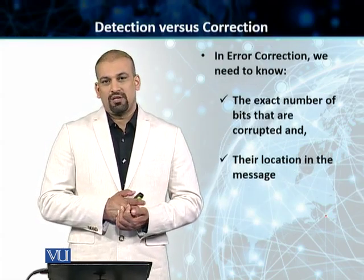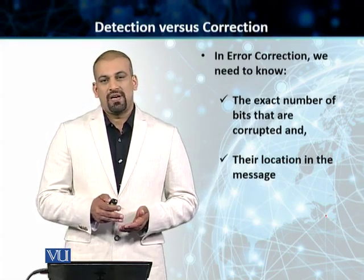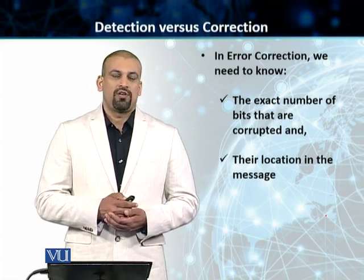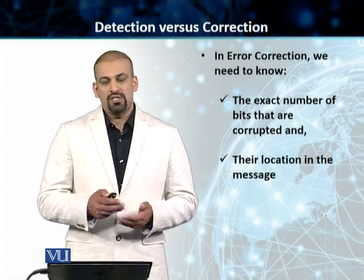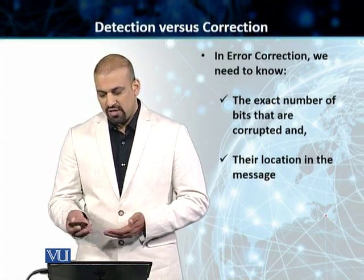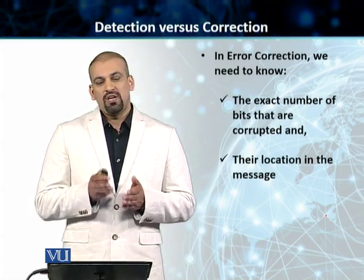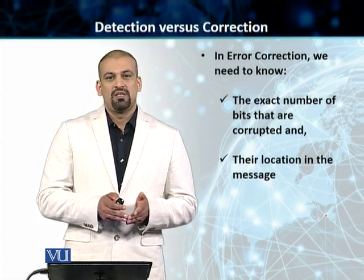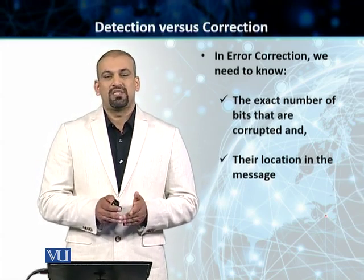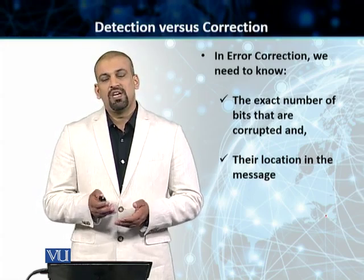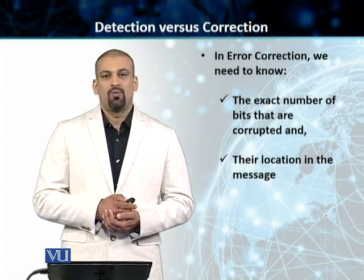In the case of error correction, there are a few factors it depends on — how robust your transmission medium or link is, and how long your message is. To summarize, error correction needs the exact number of bits that are corrupted. Because we need to fix the impacted bits, we also need to know their exact location in the message.